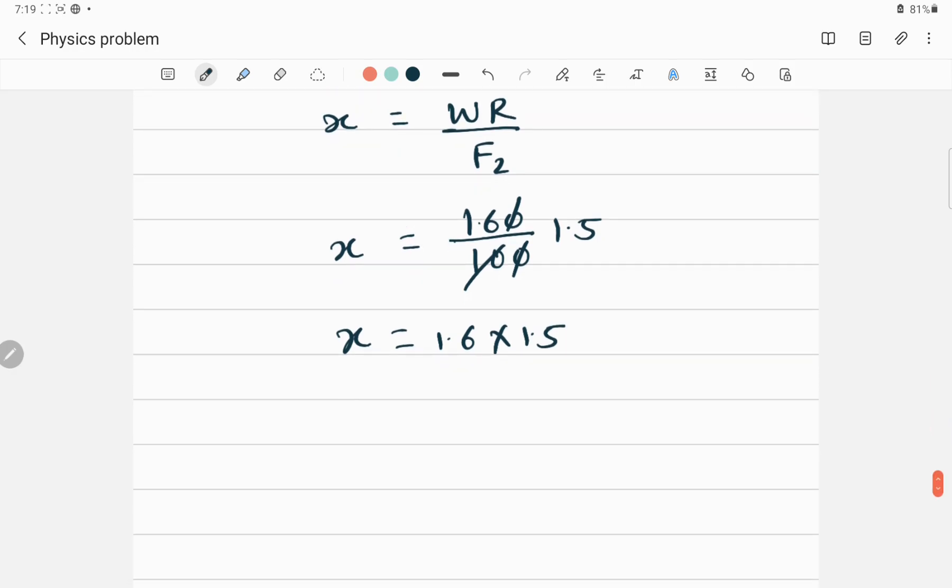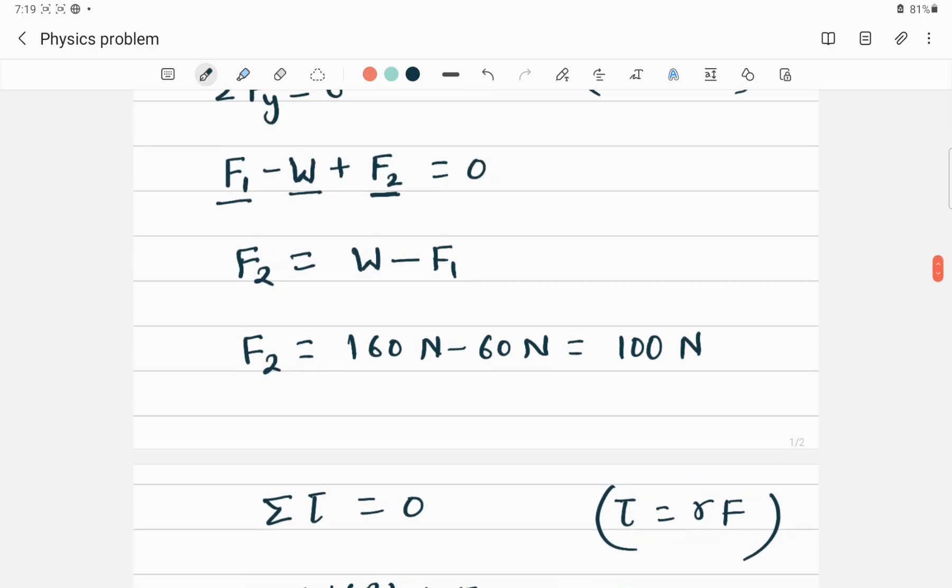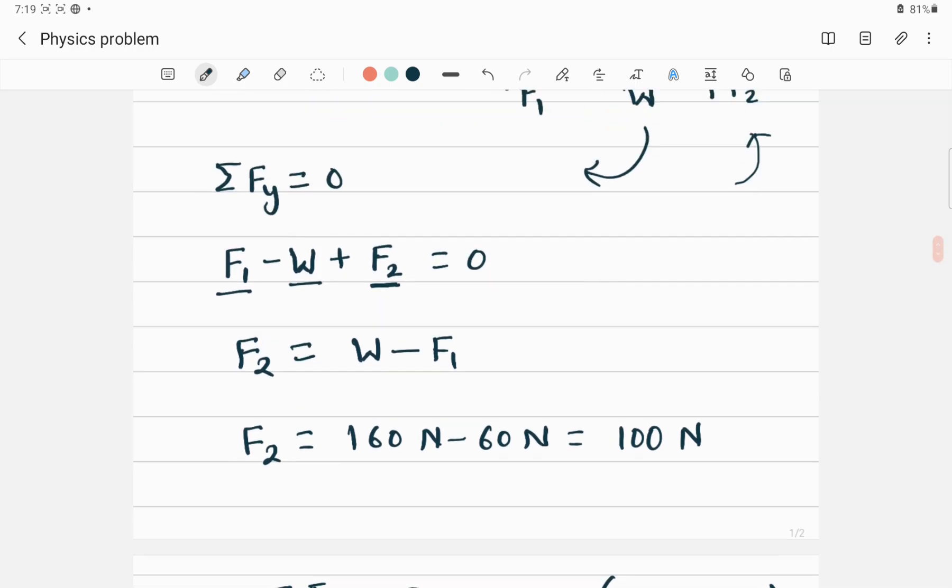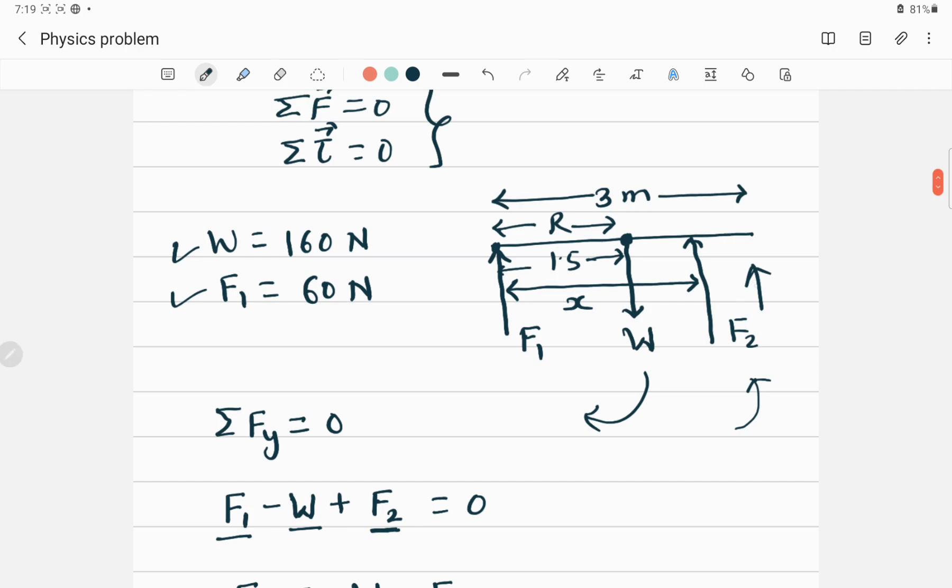This will give me x equal to 2.40 meter. So this is the distance at which second person should have to apply force to balance this wooden board. The other person lifts with a force of 100 Newton. In other words, we can say the other person should lift with a force of 100 Newton.